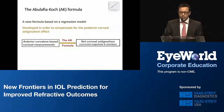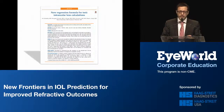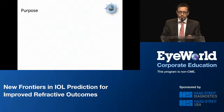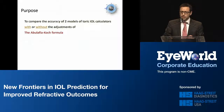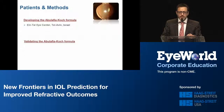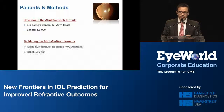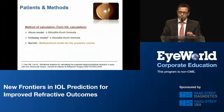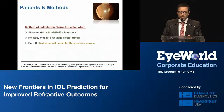We published this formula last year in the Journal of Cataract and Refractive Surgery. The purpose of that paper was to compare the accuracy of two toric IOL calculators with or without the adjustments of the Abu-Lafia Koch formula, and to compare those results with the Barrett toric calculator. For developing the formula we used data from the Antler Eye Center in Israel using LENSTAR measurements, and for validation we used data from the Lions Eye Institute in Western Australia using the IOLMaster 500 measurements. We compared the Alcon and Holladay toric calculators with or without the formula adjustments, against the Barrett toric calculator, which has an internal mathematical model for the posterior cornea.